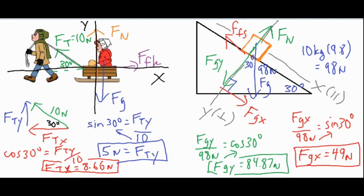To summarize: when breaking forces into components, find anything not sitting on your x or y axis. For forces on a flat surface, if a force isn't directly vertical or horizontal, use trig to find components. On an incline, use the tilted-axis method — here cosine gave us the y component and sine gave us the x component. Don't always assume sine gives y and cosine gives x; check what's opposite and adjacent to your angle, then decide.